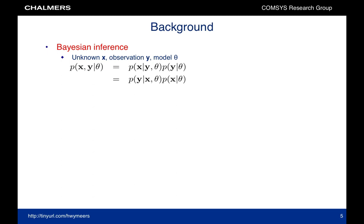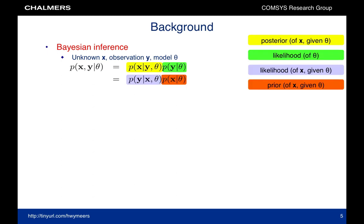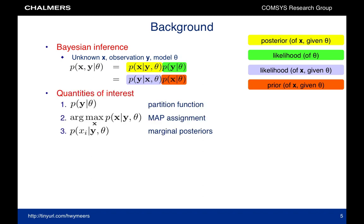Just to fix the terminology, in inference we consider an unknown variable x, an observation y, and a model theta. x and y are considered to be random variables, leading to two possible factorizations of the joint distribution. There are a number of problems of interest. First of all, what is the likelihood of the model? This is also known as the partition function. Secondly, what is the most probable configuration, or the MAP assignment? And finally, what are the marginal distributions?